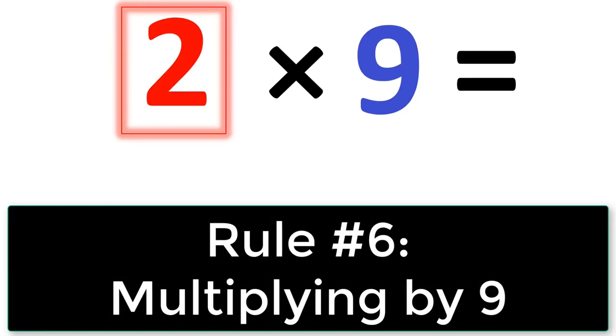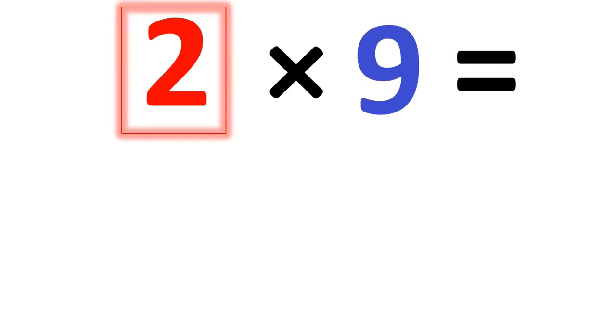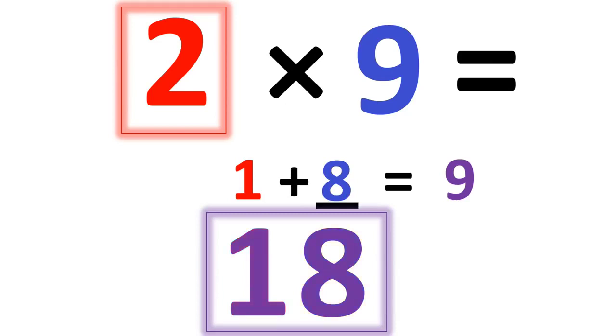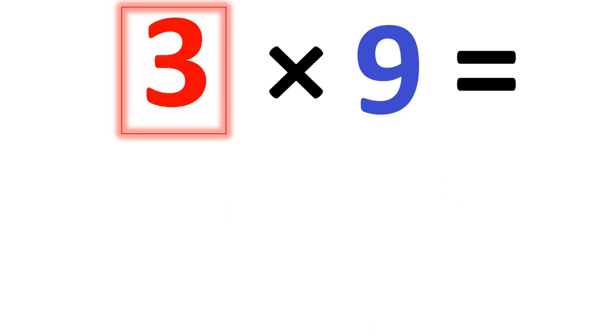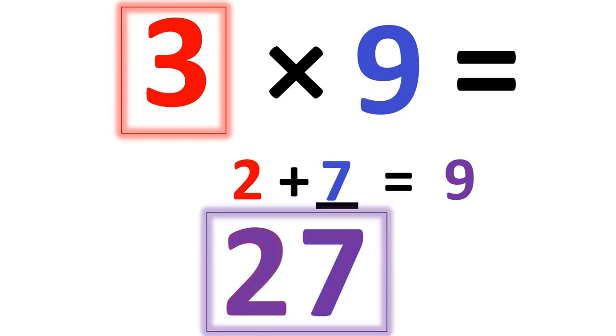So now for our last rule, which is the rule of 9. When you multiply a number times 9 such as 2, you take that first number 2 and you take 1 less than that number 2. So 1 less than 2 is 1. Then you say 1 plus what number equals 9? Well 1 plus 8 equals 9. So 8 becomes your second number. So the answer is 18. Or when you have 3 times 9. 1 less than 3 is 2. Then you say 2 plus what number equals 9? 7. So 27. So forth and so on.